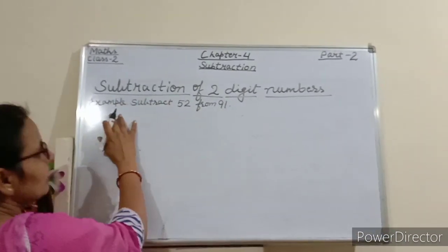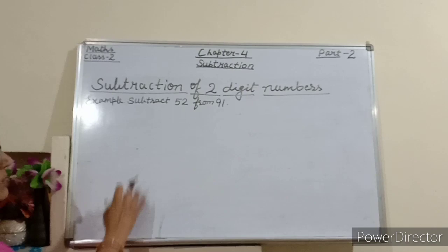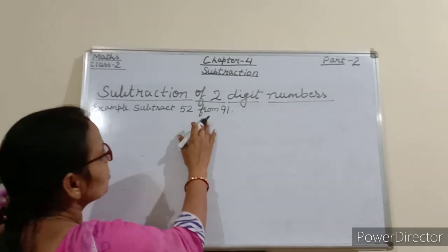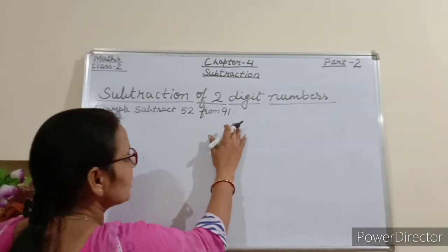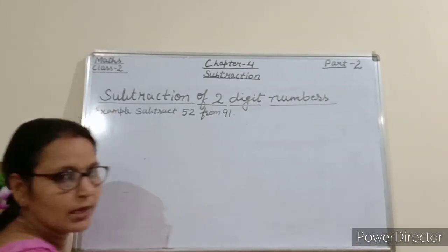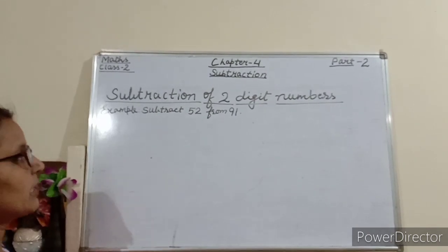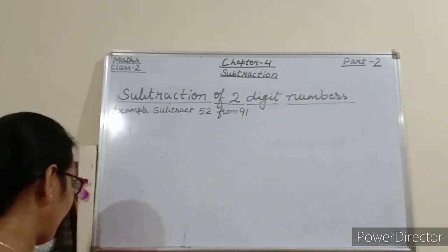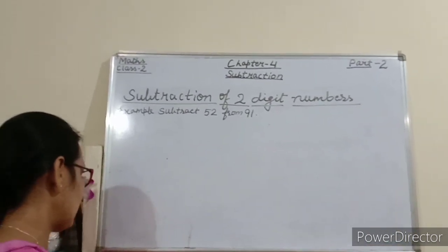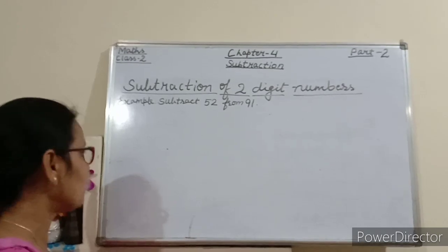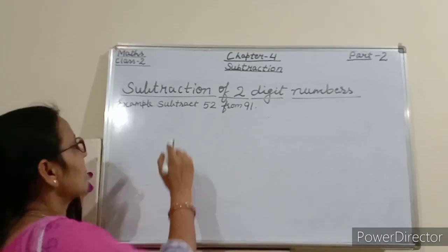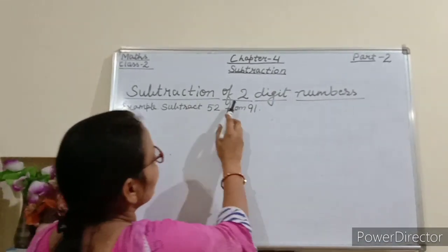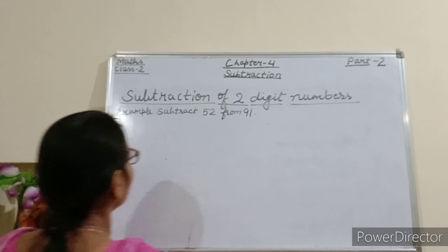See, one example I have given you. Subtract 52 from 91. You have already completed yesterday's subtraction of one-digit number from a two-digit number, and today we are going to start subtraction of two-digit numbers.